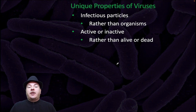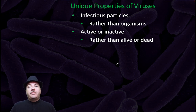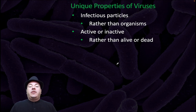In today's video, we're going to discuss the unique properties of viruses. Viruses are called infectious particles — they're not called organisms. They're not made out of cells like bacteria or your cells, so we don't call them living organisms. Instead, we call them infectious particles. Similarly, instead of calling them alive or dead, we call them active or inactive.